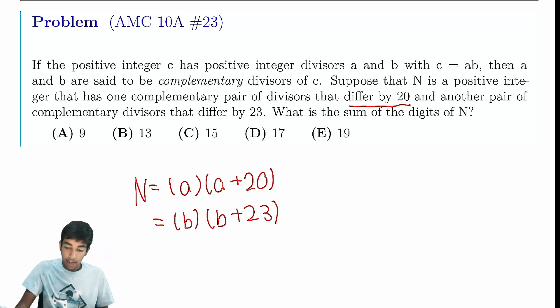So now this is like a Diophantine equation, which by the way, I covered this in the Mastering AMC 10-12 series, some techniques for approaching them. So now what do we do with this Diophantine equation? Well, naturally you might be like, okay, let's just expand, right? We have A squared plus 20A equals B squared plus 23B.